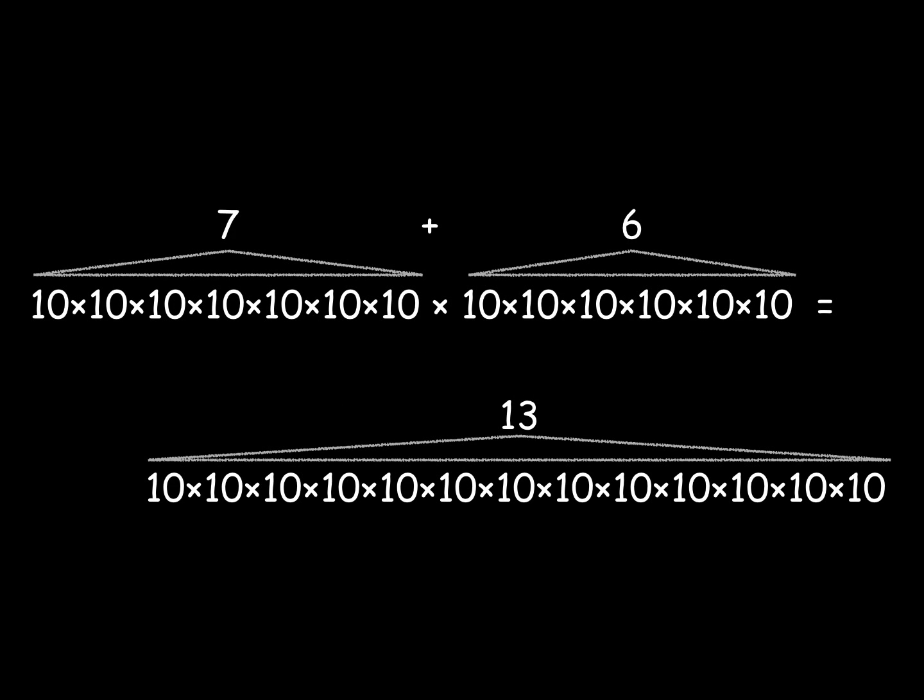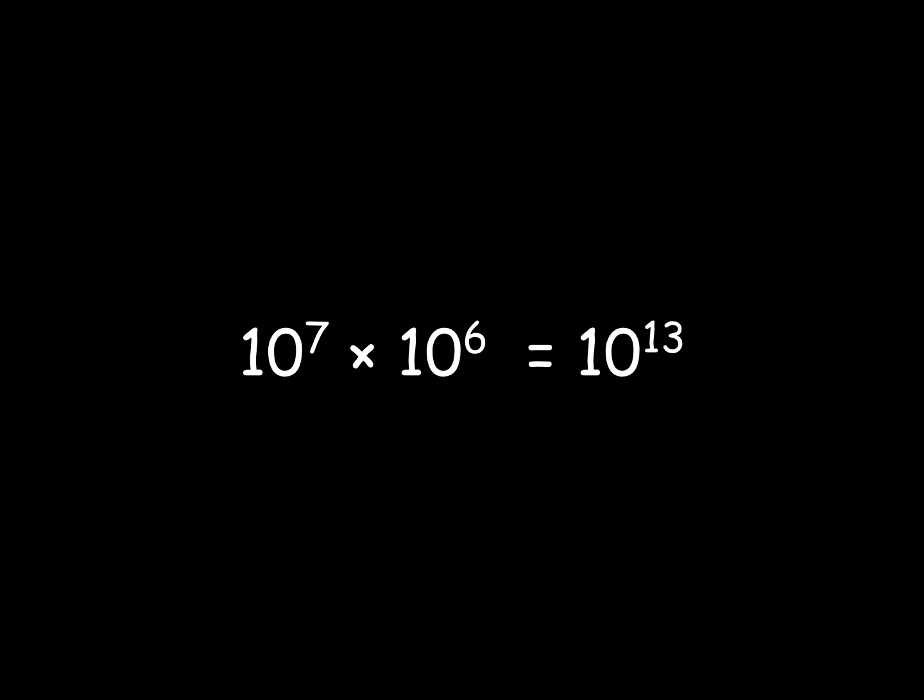If you have 7 tens multiplied together, and multiply that by 6 more tens multiplied together, then you've multiplied 13 tens together in total. If you like math notation, it looks like this. So, here's the thing. There's no reason we have to stick with the number 10. 10 is just convenient because the number of zeros tells you how many times 10 got multiplied together. But there are other ways of keeping track of that.